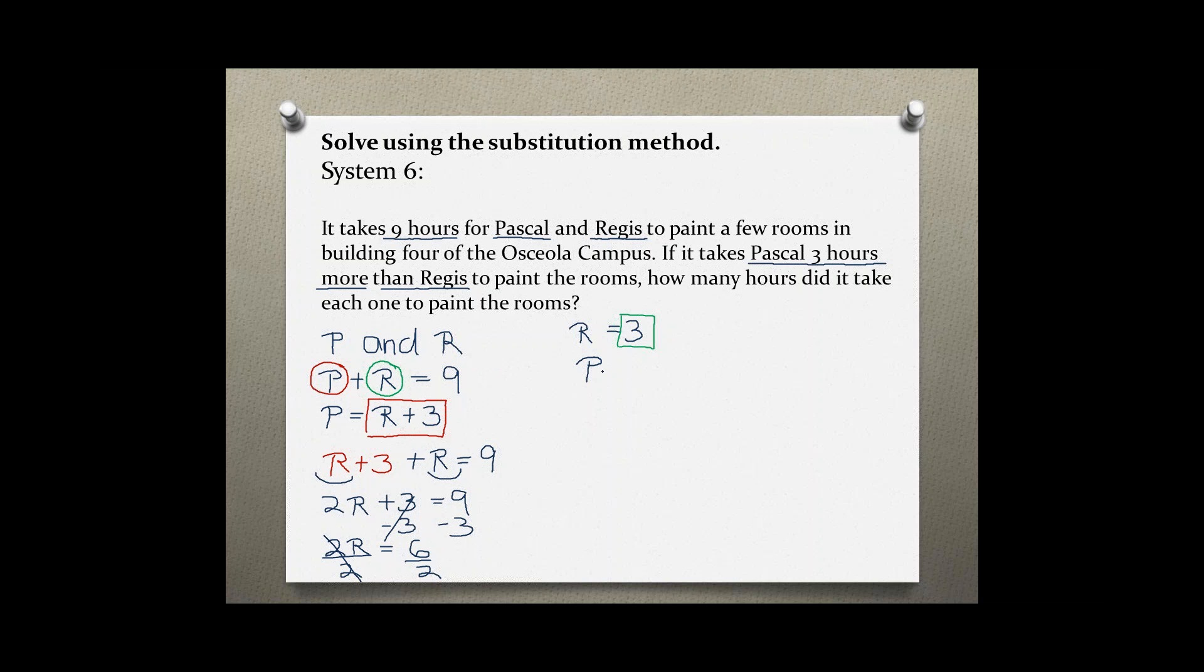So P plus three equals nine. Solving for P, subtracting three from both sides, we get P equals six. So it took Pascal six hours to paint the rooms and it took Regis three hours to paint the rooms.